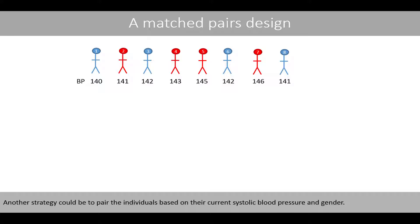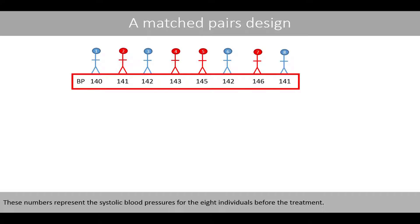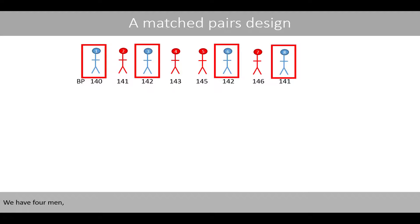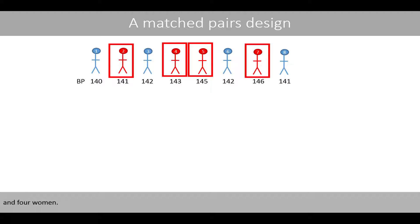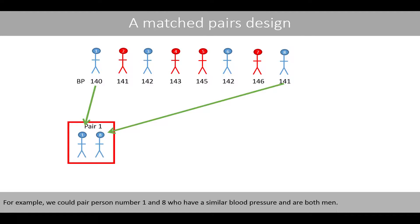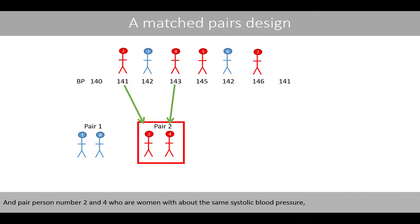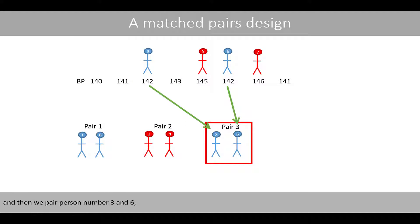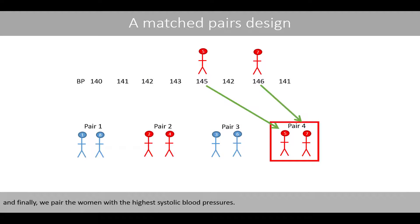Another strategy could be to pair the individuals based on their current systolic blood pressure and gender. These numbers represent the systolic blood pressures for the eight individuals before the treatment. We have four men and four women. For example, we could pair person number one and eight, who have a similar blood pressure and are both men, and pair person number two and four, who are women with about the same systolic blood pressure. Then we pair person number three and six, and finally we pair the women with the highest systolic blood pressures.